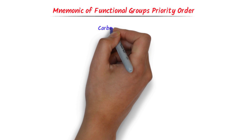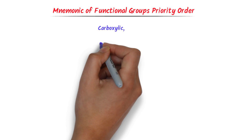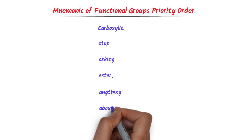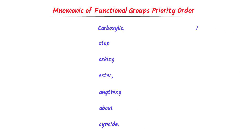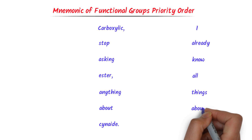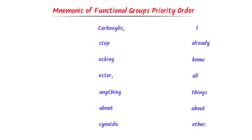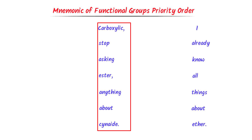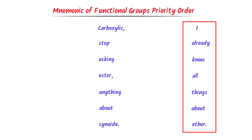The mnemonic is: Carboxylic, stop asking ester anything about cyanide. I already know all things about ether. Carboxylic, stop asking ester anything about cyanide. I already know all things about ether.